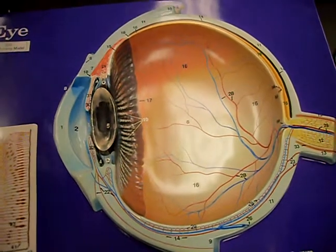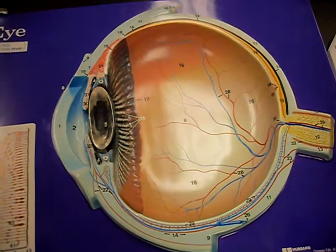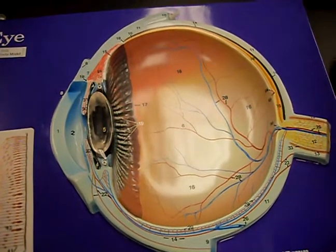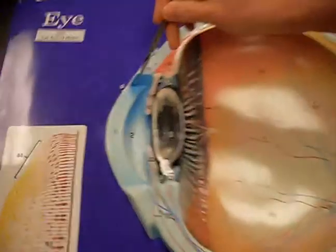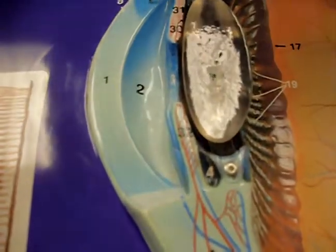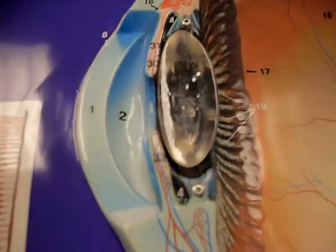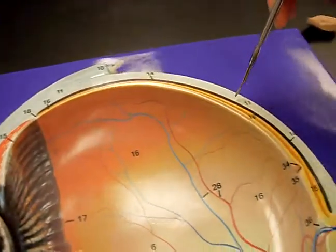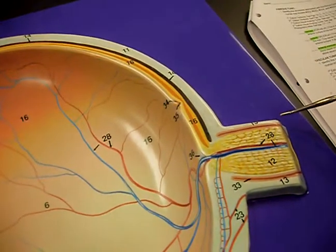The outer fibrous tunic has three components. First is the cornea, which is clear. Then you have the sclera, which is the white part of the eye, extending all the way to the back.